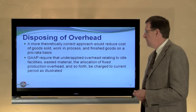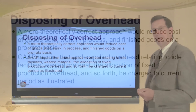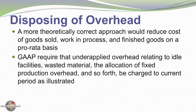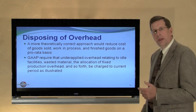GAAP also addresses this. Generally accepted accounting principles require that underapplied overhead relating to facilities, wasted material, the allocation of fixed production overhead, and so forth, be charged to the current period as was illustrated. So there is some basis for supporting the allocation to cost of goods sold.